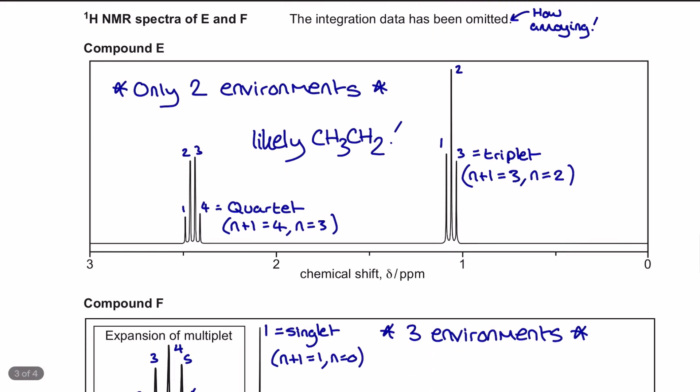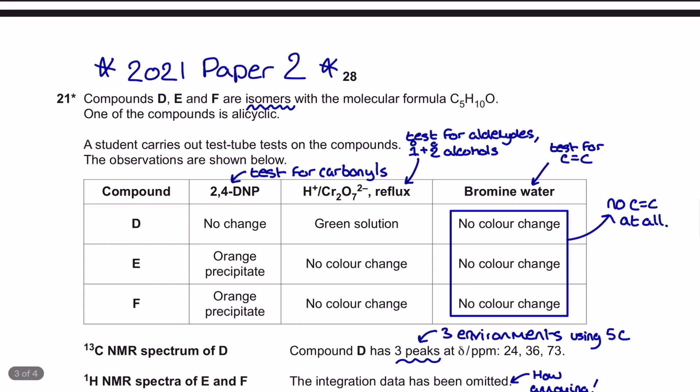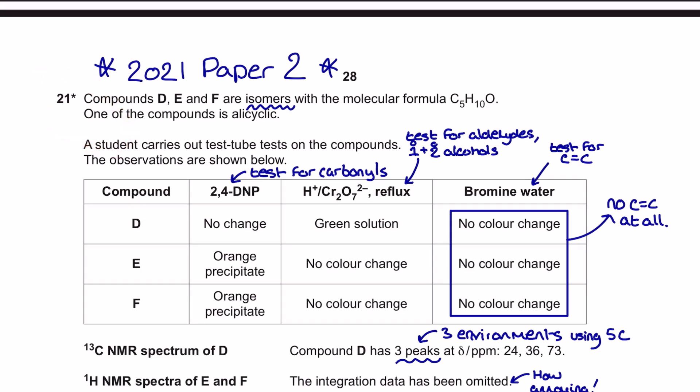Don't forget, for the spectroscopy questions on the OCR A specification, examiners are — to the date of this video — told to actually check the spectrum for annotation. So if you are running out of time in the exam, you can always annotate your spectrum using a lot of detail, and it will be considered towards your answer.